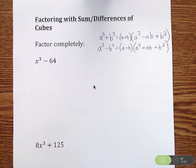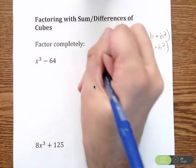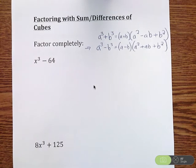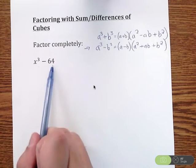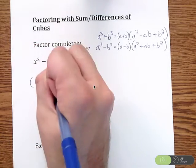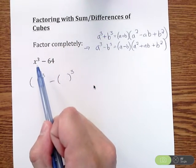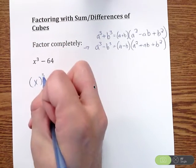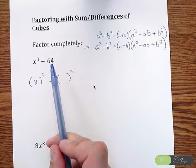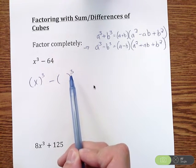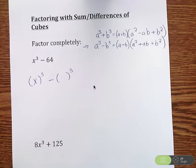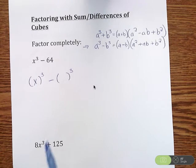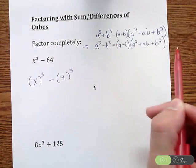We're going to start with x cubed minus 64 and we want to factor this completely. I already know that I'm doing a difference of cubes simply because we are subtracting here. What we want to do is rewrite this so I have some quantity cubed minus some other number cubed. What value would I have to cube to get x cubed? That's just plain old x. Then I need to figure out what to the third power is 64. You might need to try 2 to the third, 3 to the third, 4 to the third — for this one it is 4 to the third power. Once you rewrite it, it's pretty simple to just plug into the formula.